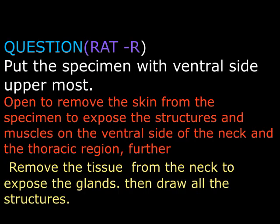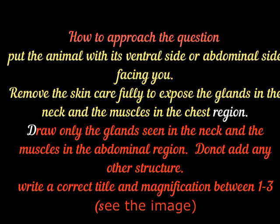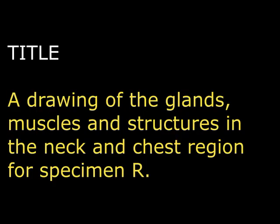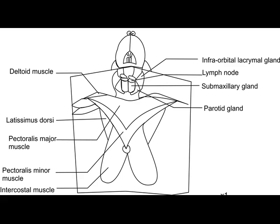Now I'm going to consider one question here. The question is about removing the skin — you get your dissecting kit and remove the skin, the same way you see people skinning a cow or goat. You cut a small slit then open up to remove the skin. The question doesn't want you to damage the structures under the skin. The visible structures on the ventral side of the neck are glands and lymph nodes. You must not damage the muscles in the thoracic region.